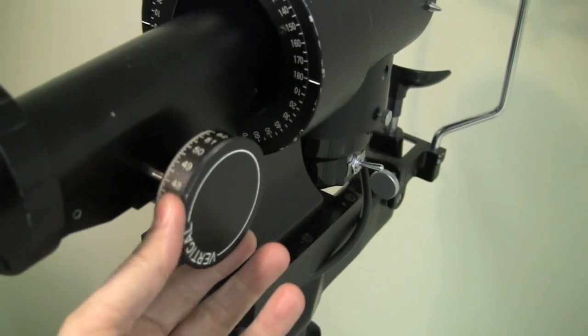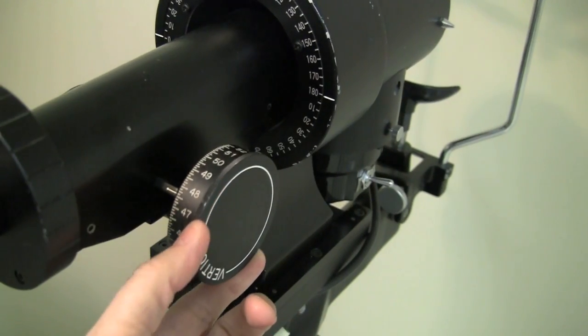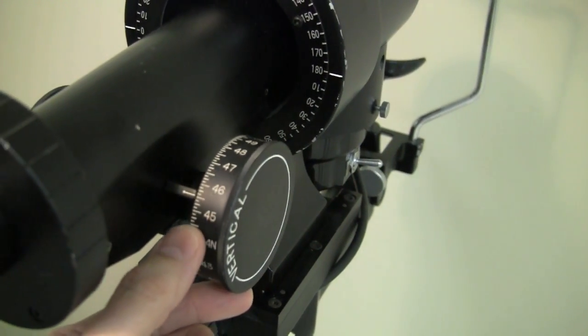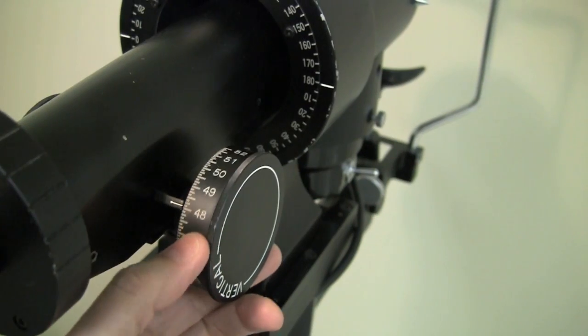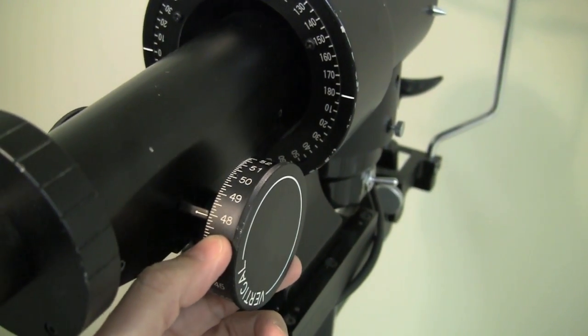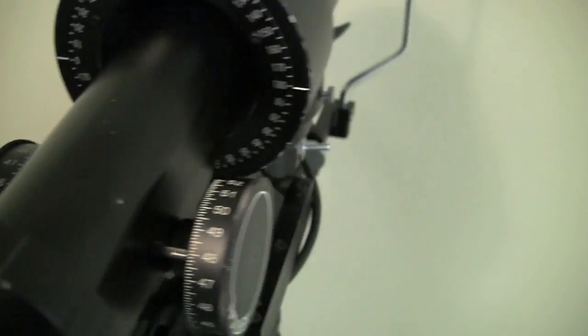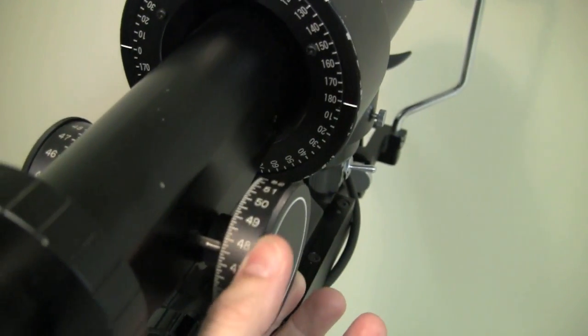You also have the knobs that you use to measure the cornea with. These are, on this one, noted in diopter values rather than millimeter values. Sometimes you see one or the other or even both. And there's one for the horizontal meridian on this side and the vertical meridian on this side.